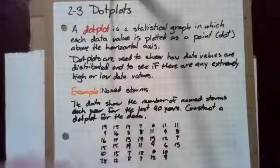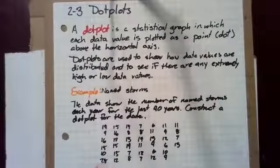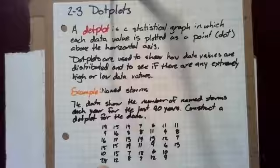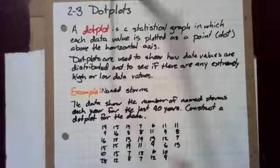So here is our data. We've got a high value of 28 over here and a low value of 4 right there.